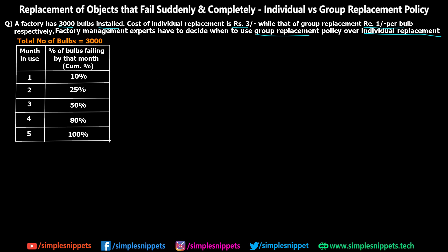This depends upon what is the life of the bulb, which is given in a table. We have 3000 total bulbs. The table gives months in use and the percentage of bulbs failing by that month. In the first month, 10% of the bulbs are going to be failing — so if we have 100 bulbs, 10% of 100 is 10 bulbs failing after one month. After two months, 25% are failing. This is cumulative, which means the 10% is already included in the 25%.